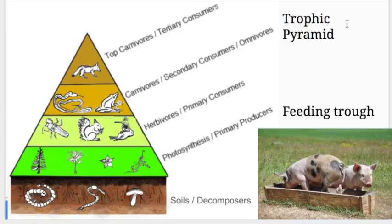Now trophic means feeding. Over here this picture of these pigs, they are eating out of a feeding trough. That trough, that word right there, is the same root word as trophic in trophic pyramids.